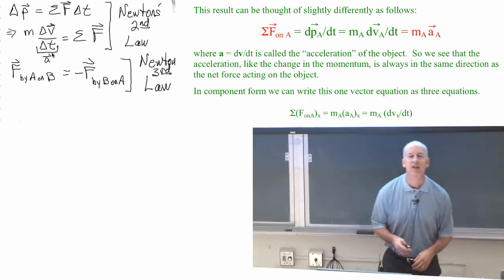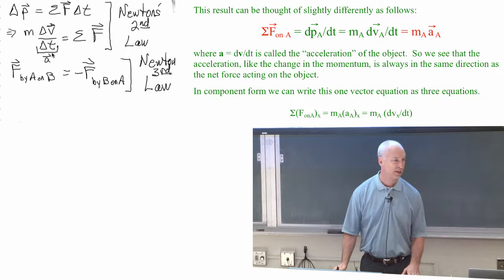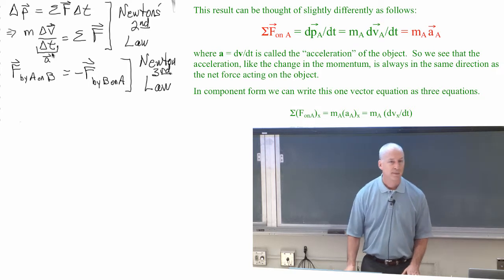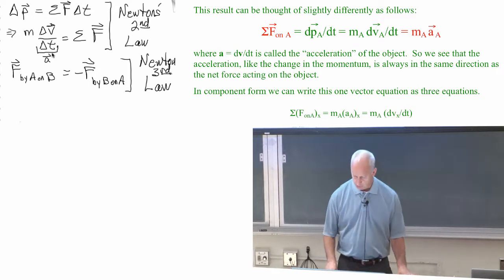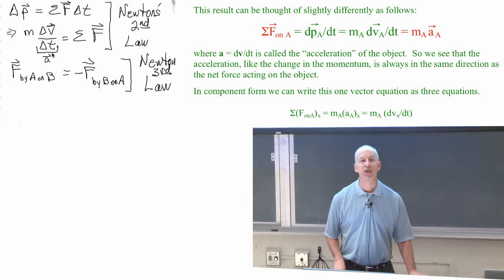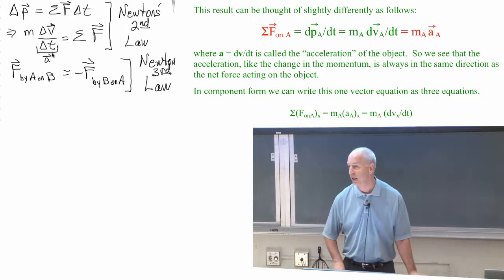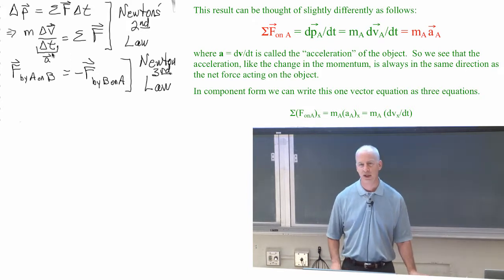It's only when the velocity vector is constant that the acceleration is zero. If you're moving at a constant speed in a straight line, then your velocity vector isn't changing, and so your acceleration would be zero.